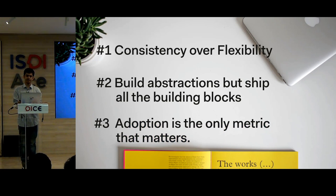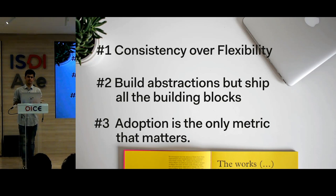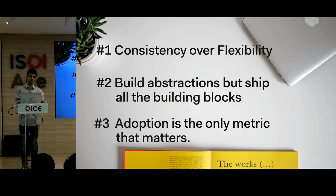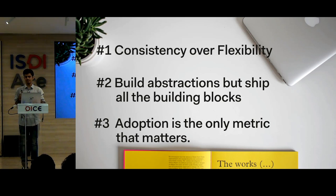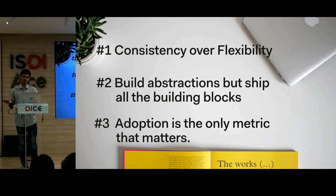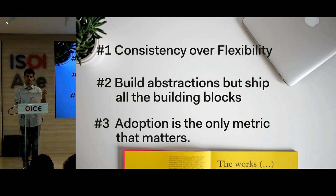Third: adoption is the only metric that matters. You can create all the fancy components you want, but if it's not usable, if it doesn't work for your developers, you're building for yourself. Optimize for usage and for actual use cases. For example, I really wanted to use portals from React 16, but the app that wanted to adopt us was on React 15. I could have said 'React 15 is old, upgrade first' — but that adds friction for users. Instead, we used a polyfill which adds a little to the bundle size, but they could use it in the React 15 system. Optimize for adoption, not for purity.